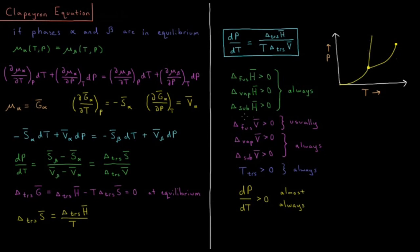The notable exception is water, where delta V̄ of fusion is less than zero — ice has a lower density and thus a higher molar volume than liquid water — so the slope of this coexistence line actually goes backwards. The Clausius-Clapeyron equation is valid over small regions of temperature and volume change. In the next video, we will look at an extension to this equation to apply it over a wider range of temperatures to see what the coexistence curve looks like as a function of temperature and pressure.